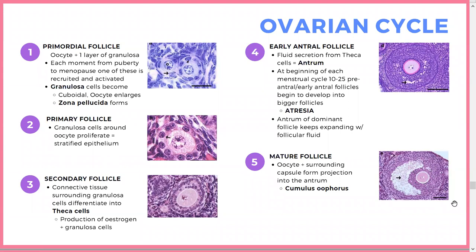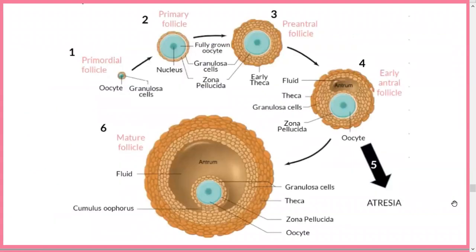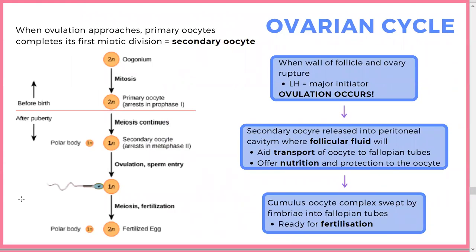The mature follicle has an oocyte surrounded by a capsule projecting into the antrum — this projection is called the cumulus oophorus. At this stage the oocyte finally completes its first meiotic division, because oocytes are arrested at prophase I from before birth. Women are born with all their oocytes, which decrease over time, all arrested at prophase I.